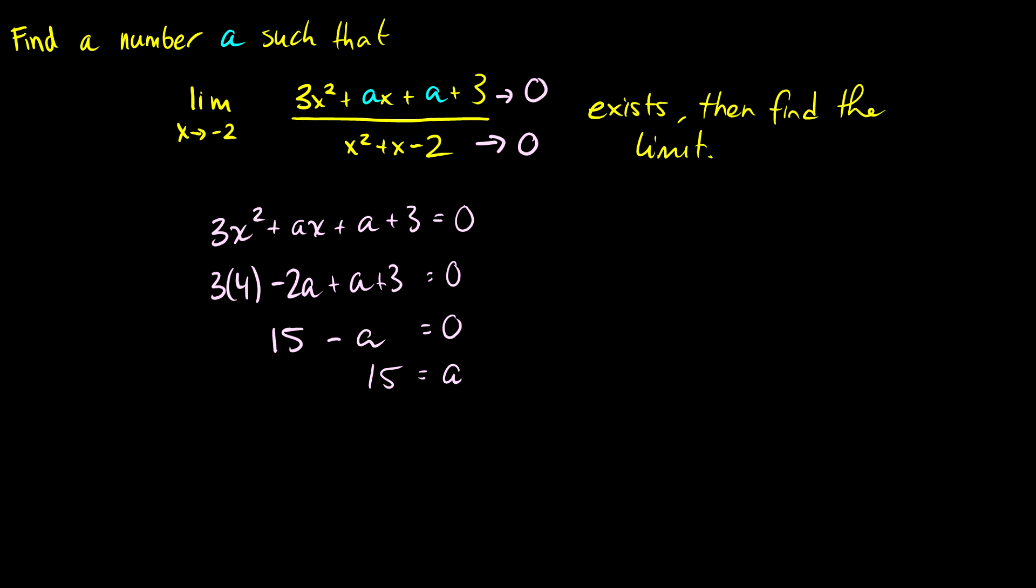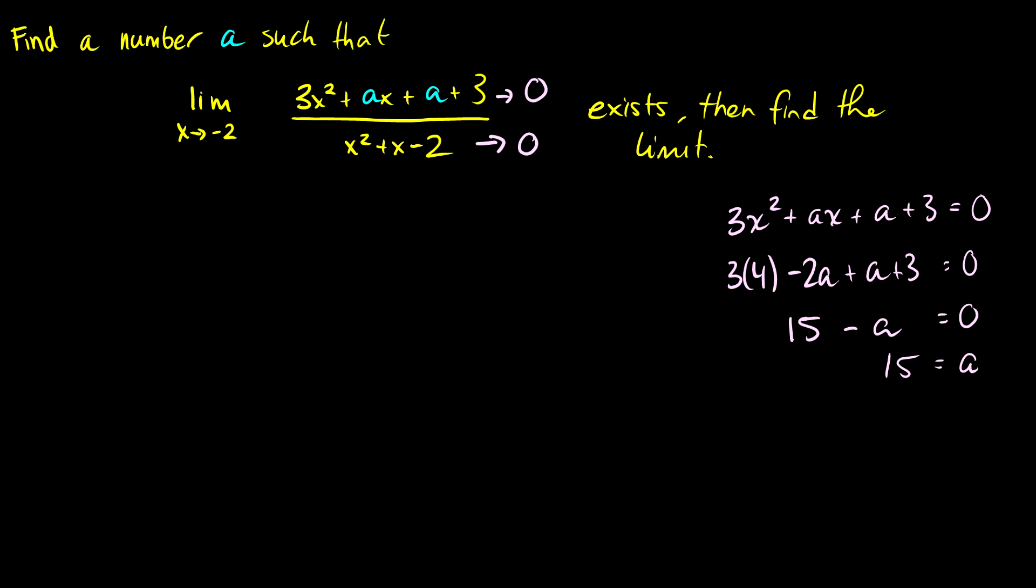Okay, so if a is equal to 15 then we can make the limit as x goes to negative 2 equal to 0 on top. Let's put this over on the side and then continue. Now we have our a values.